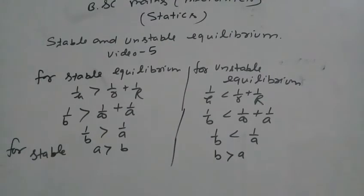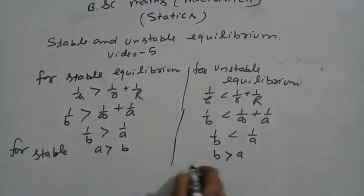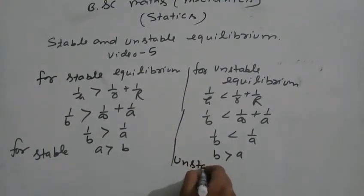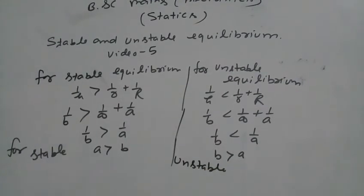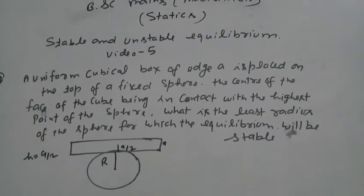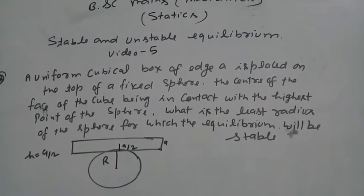For stable: b is less than a/2. For unstable: b is greater than a/2. Next question is of the same type.